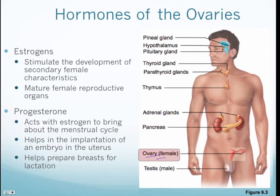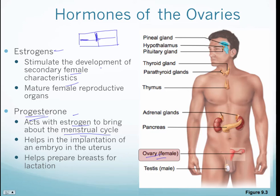The ovaries secrete estrogen and progesterone. Estrogen stimulates development of female sex characteristics — development of the breasts, pubic hair, and other body hair. Progesterone acts with estrogen to bring about the menstrual cycle. Think of it like a brick wall: estrogen is like the bricks and progesterone is like the cement between them — collectively they maintain the structure and inner lining of the uterus for implantation of the embryo.